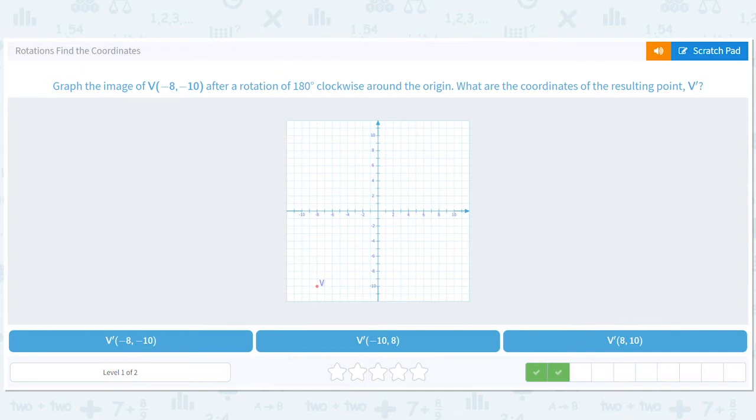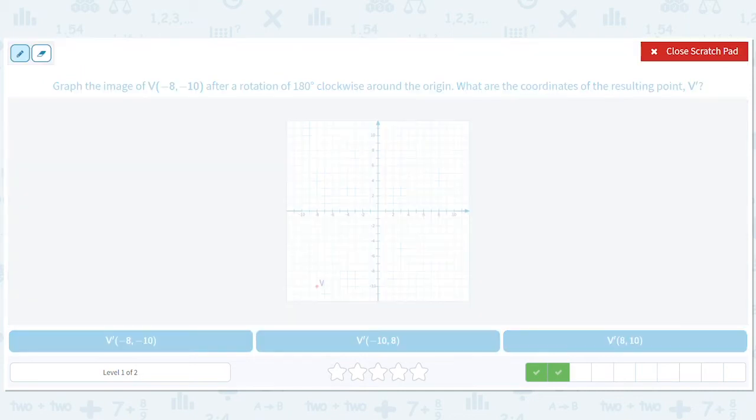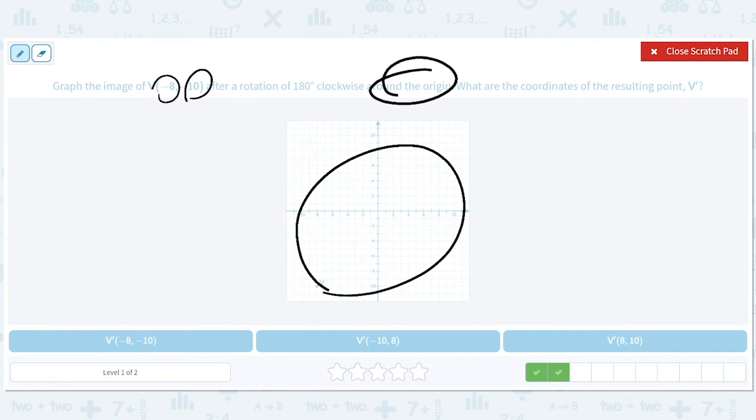So clockwise, you're getting the idea of 180 degree rotations are just going to flip the signs of these things. Every 180 degree rotation about the origin is going to flip the signs. Whether we go clockwise or counterclockwise, clockwise would be that way, counterclockwise would be that way. We're always going to get, if it's 180 degrees, to that opposite side.